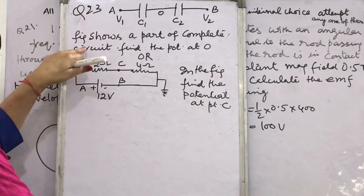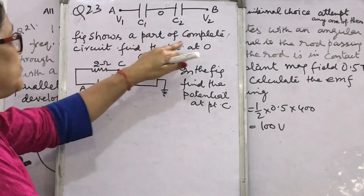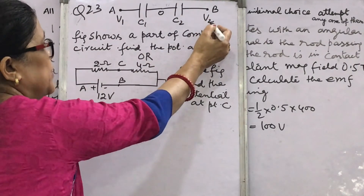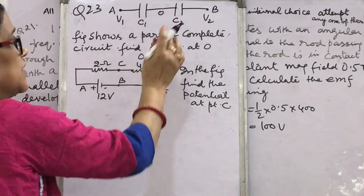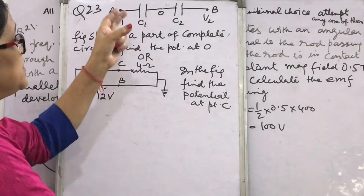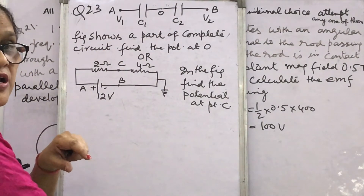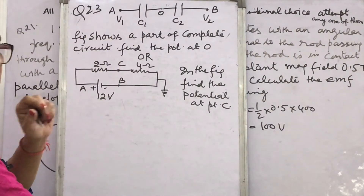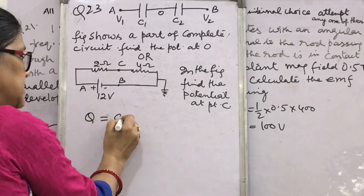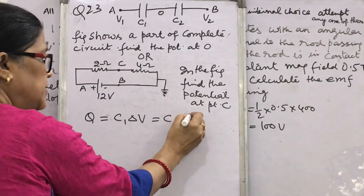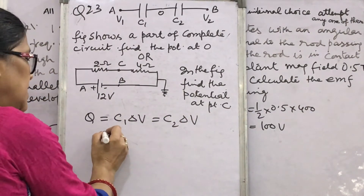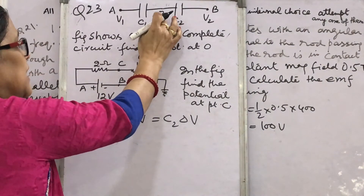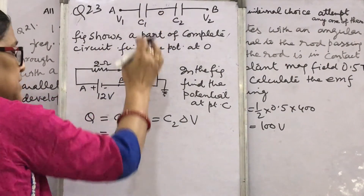Question 23: the figure shows part of a complete circuit. Find the potential at O. At point A the potential is V1, at point B it is V2, and at O you have to find the potential. C1 and C2 are capacitors connected in series. The quantity that remains constant in series is charge Q. So for the first capacitor write C1 × (V1 − V), and for the second capacitor C2 × (V − V2), where V is the potential at O.